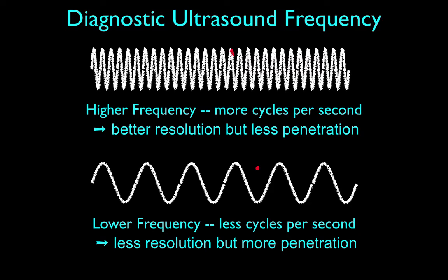A high-frequency probe gives many repetitive waves per second, picking up smaller details, but it won't travel very far into the body. A low-frequency probe won't pick up as many fine details, but it will penetrate much farther — so the choice of probe depends on the clinical need.